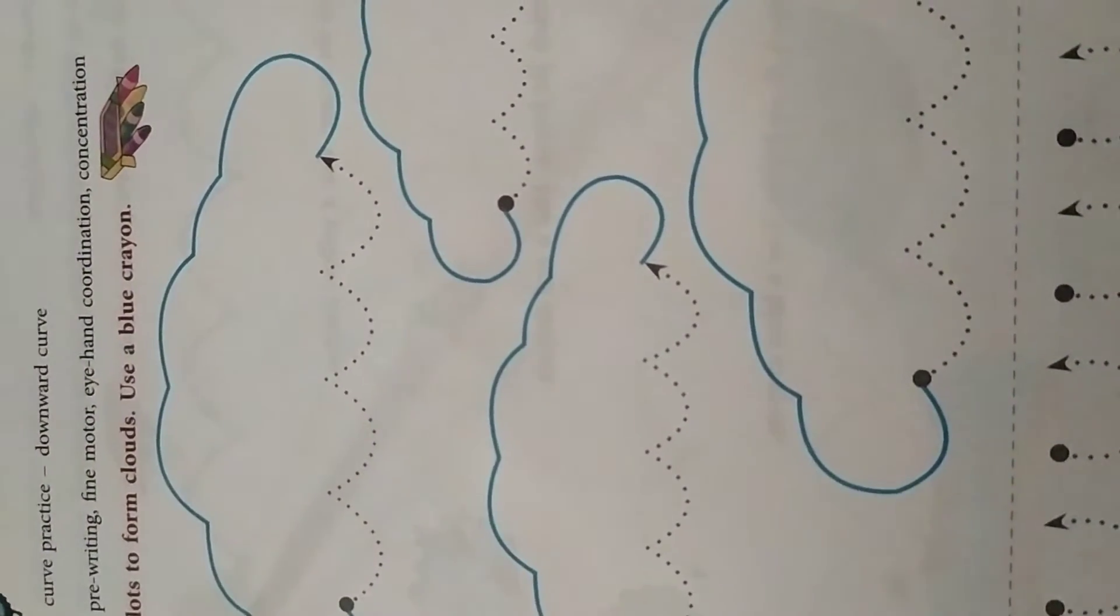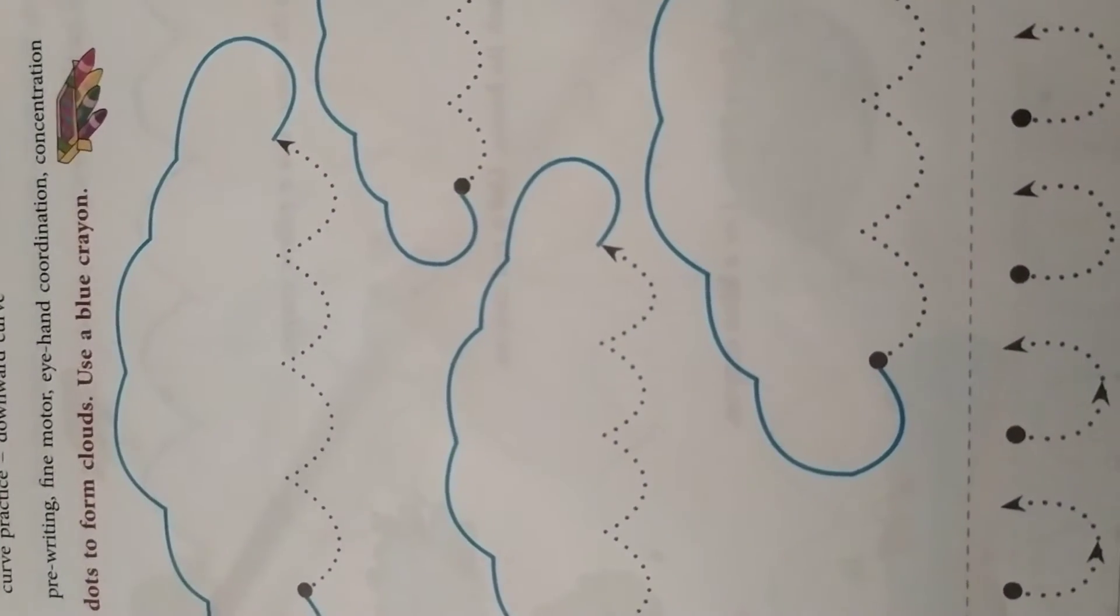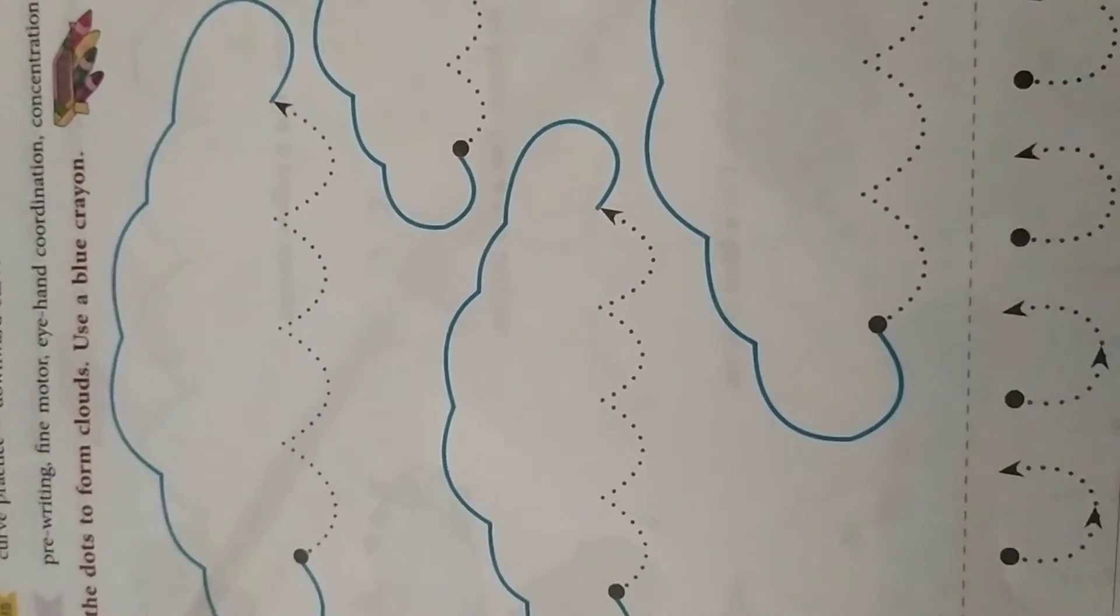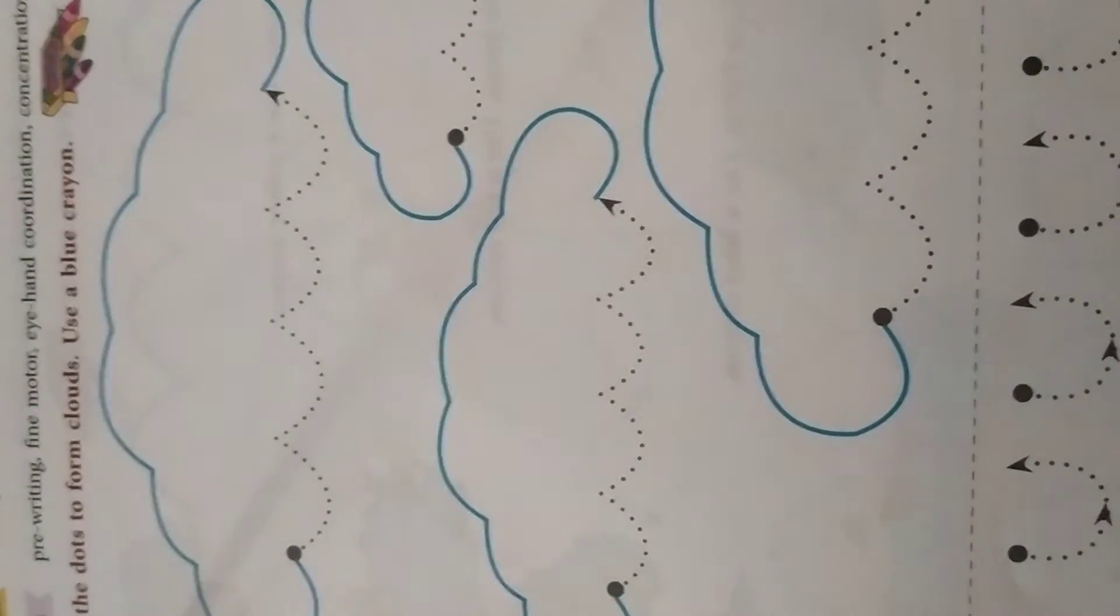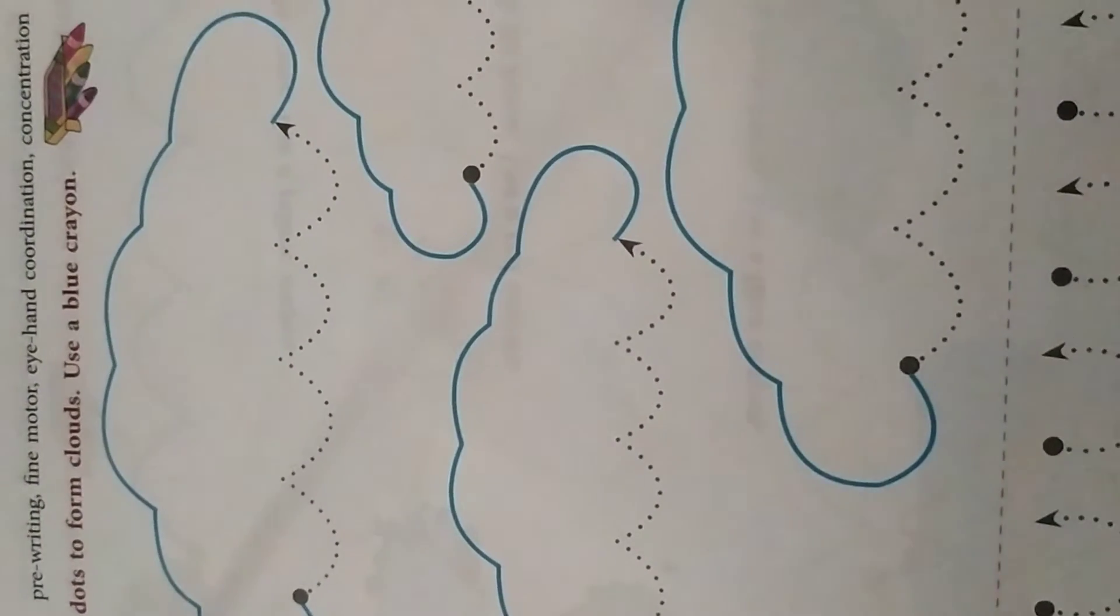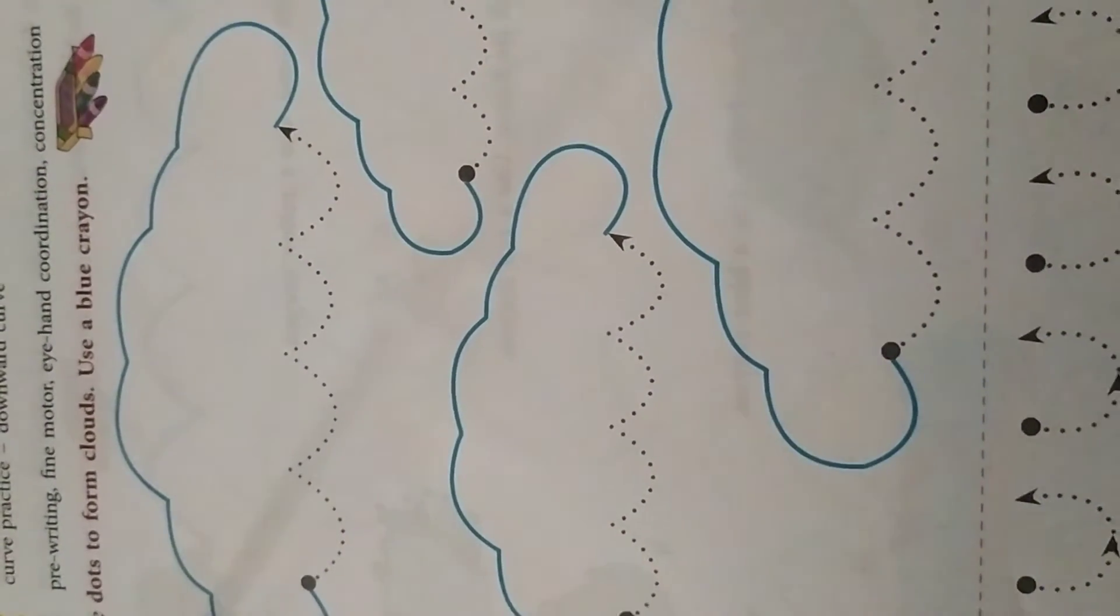Children, how will the clouds be in shape? So upward, downward curves you can see in the clouds. Right. So here clouds are given children for practice, down curve.